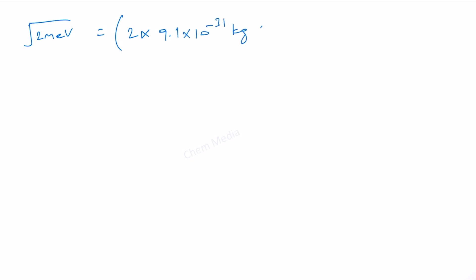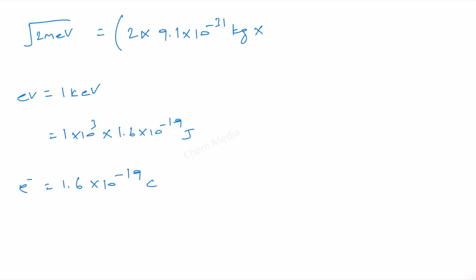Let us find out the value of square root of 2meV. That is equal to 2 times 9.1 times 10 to the power minus 31 kg, times eV which is 1 kilo electron volt — that is 1 times 10 to the power 3 times 1.6 times 10 to the power minus 19 joules, because the charge of an electron is 1.6 times 10 to the power minus 19 coulombs, which multiplied by 1 volt gives this value — all to the whole power 1 by 2.